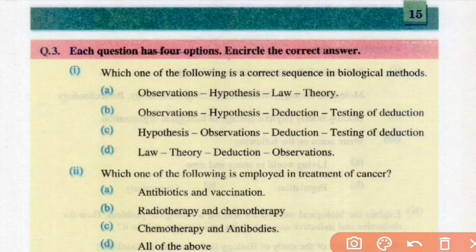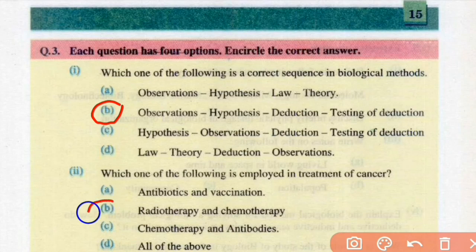Question No. 3: Encircle the correct answer. No. 1: Which one of the following is a correct sequence in biological method? Biological method ke ander correct sequence koun sa hai? Iska right answer B hai: Observations, Hypothesis, Deduction, Testing of Deduction. No. 2: Which one of the following is employed in treatment of cancer? Right answer is B: Radiotherapy and Chemotherapy.